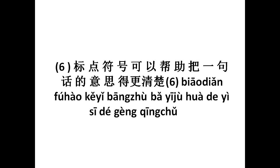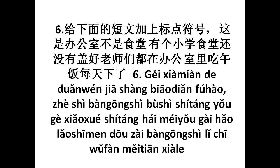Moving on to the sixth exercise. Let us read this short text. Chesh, Pan kong shi, Poo shi, Shi thang — this is office and not a canteen. In this text there are no punctuation marks and we have to put punctuation marks accordingly. As in the title there are no punctuation marks, so we have to make out the meaning: it says it is an office and not a school, and it can be said in different ways using different punctuation marks. Yook xiao shwe, shri thang hai mei yu kai — shri thang is canteen, kai is to build. Lao shraman tau zai pan kong shri li chha wu fan — so teachers used to eat lunch in the office.